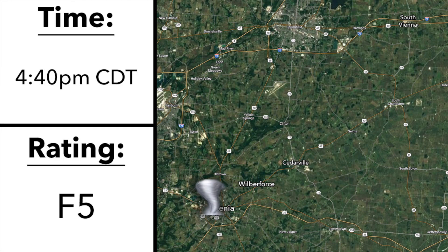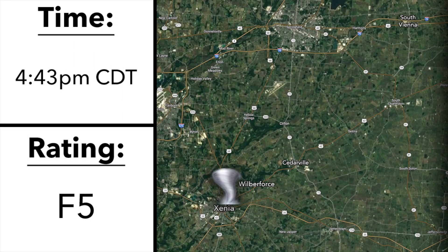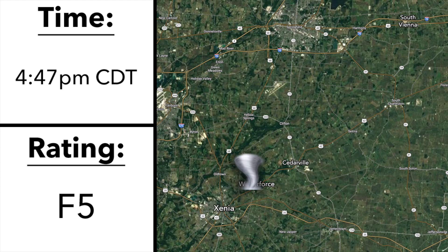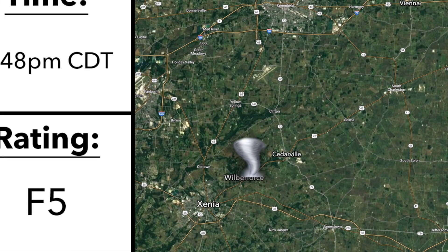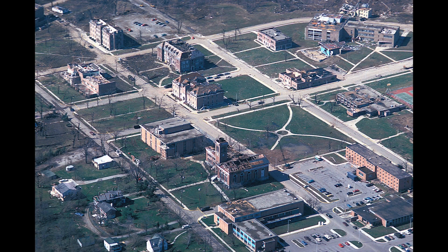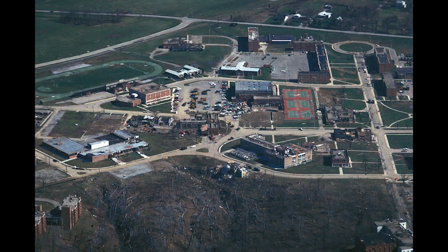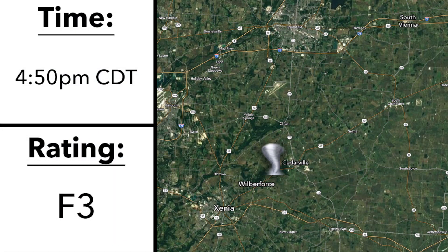As the tornado continued past downtown Xenia, it entered the Pinecrest Garden District, where this area would experience extensive damage. Continuing northeast, the tornado heavily damaged several campus and residential buildings of Wilberforce University. The tornado also impacted Central State University, causing considerable damage as well as toppling a water tower there. Shortly afterwards, the tornado would weaken and dissipate.